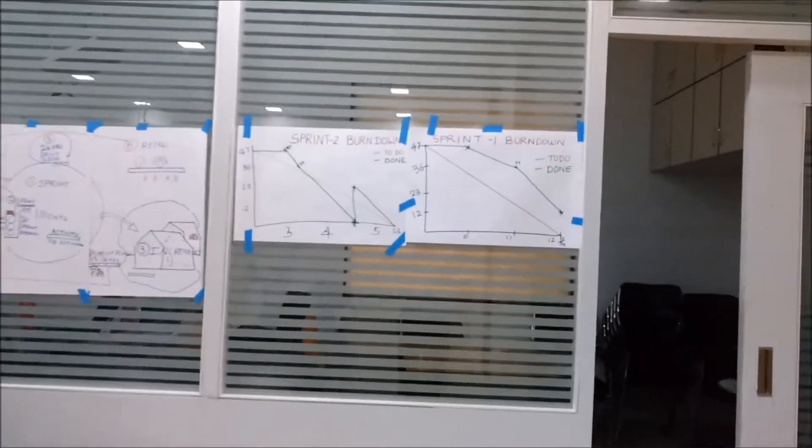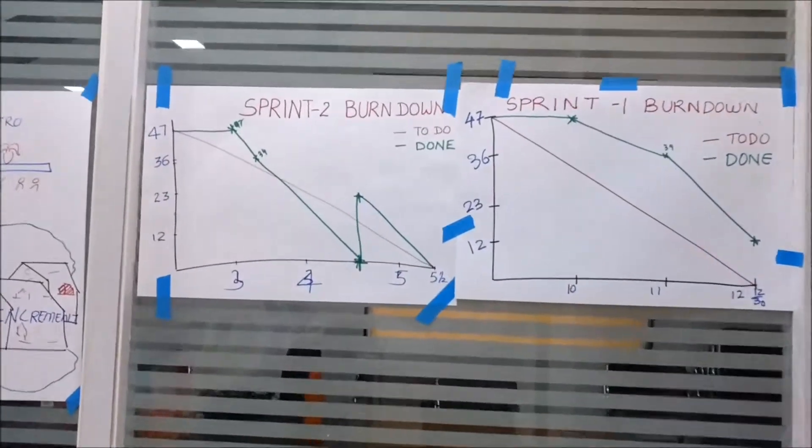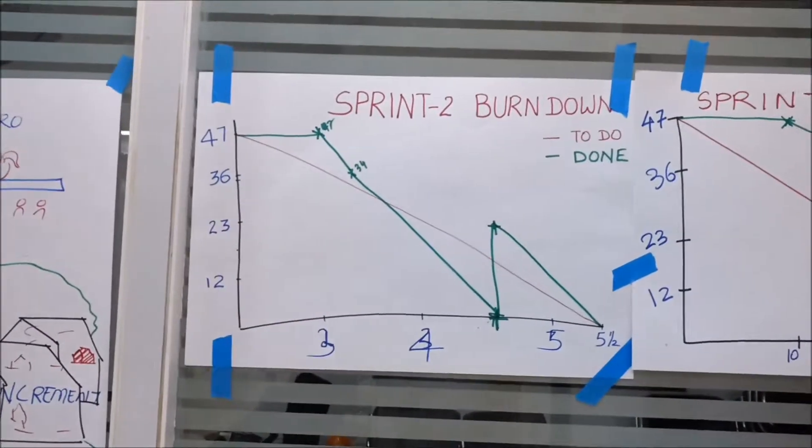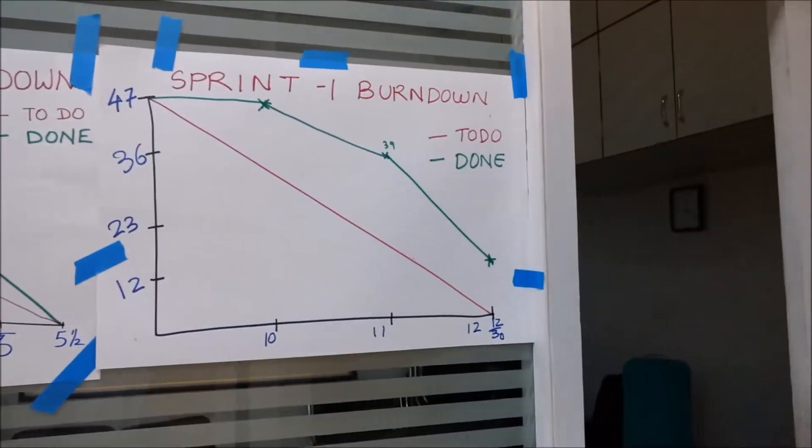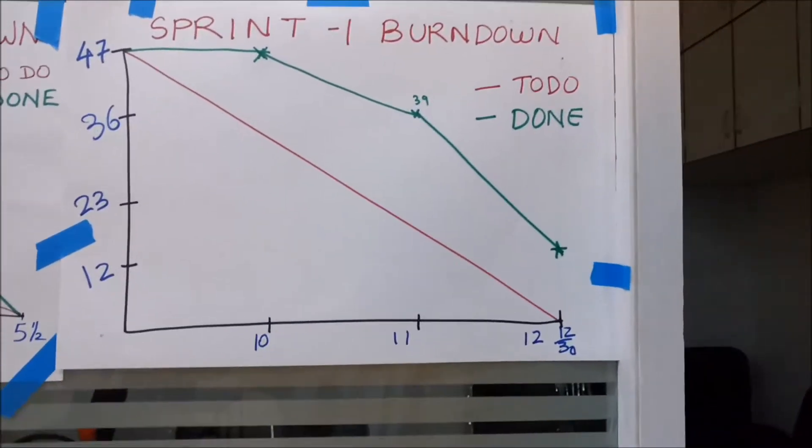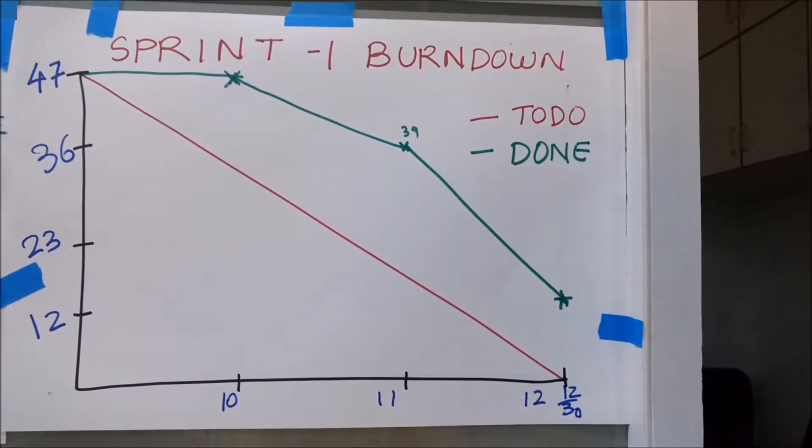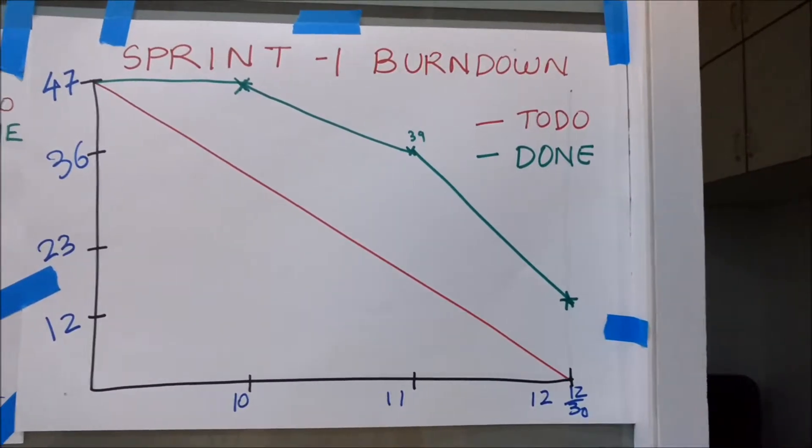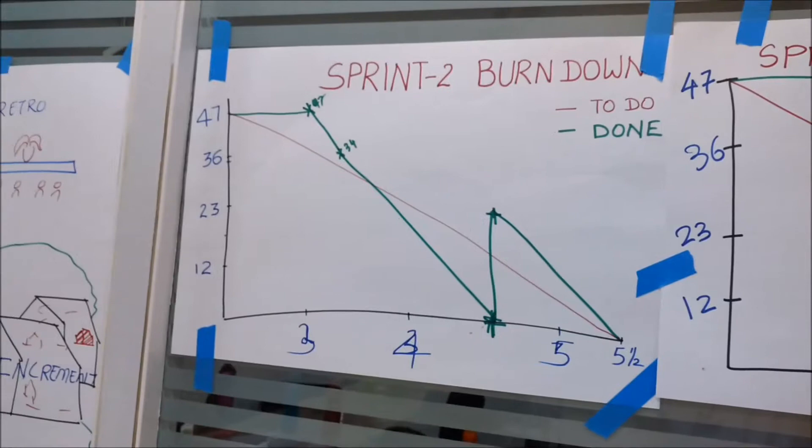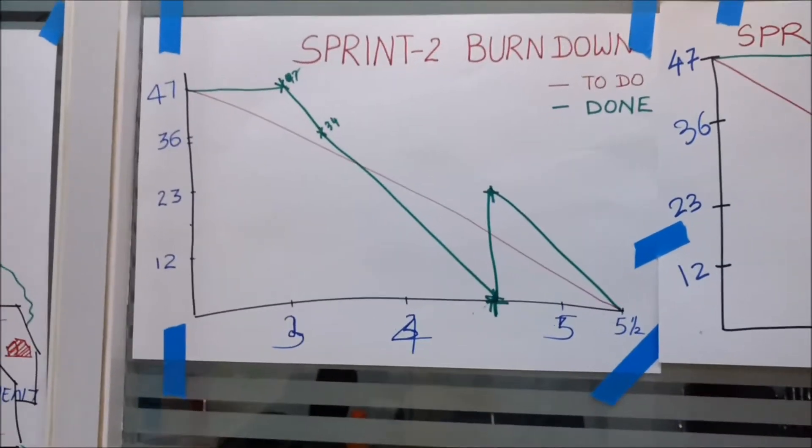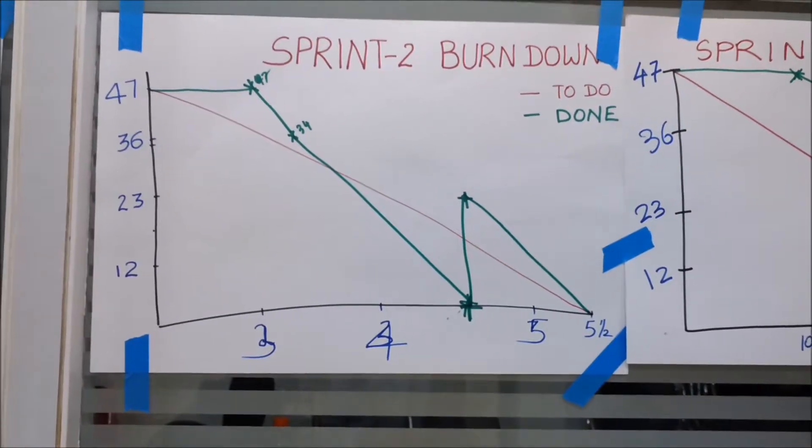Now I have simulated a few conditions related to the product backlog. I'll just show this sprint burndown that I have drawn. You can see that in the first sprint I have simulated a condition where we have not been able to complete all the items, and in sprint 2 we have simulated a condition where we had an early completion of the sprint, so we took up another item and we took it for execution.